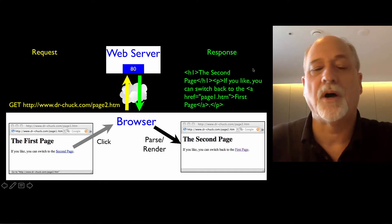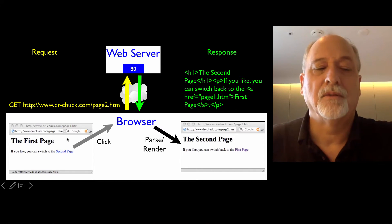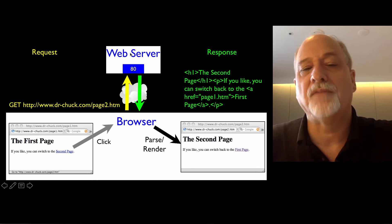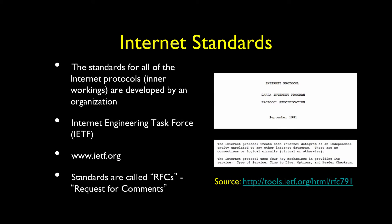That's the request-response cycle: request, response. The page, some action, request, make a page, the page comes back, and then it's rendered. That process — the request-response cycle — is covered by a number of different internet standards.